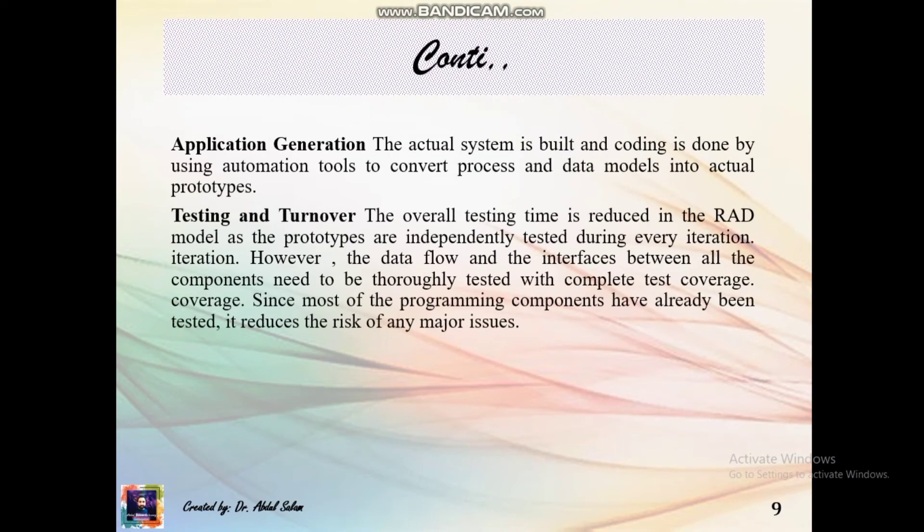Application Generation: the actual system is built and coding is done using automation tools to convert process and data models into actual prototypes. Testing: the overall testing time is reduced in the RAD model as the prototypes are independently tested during every iteration.